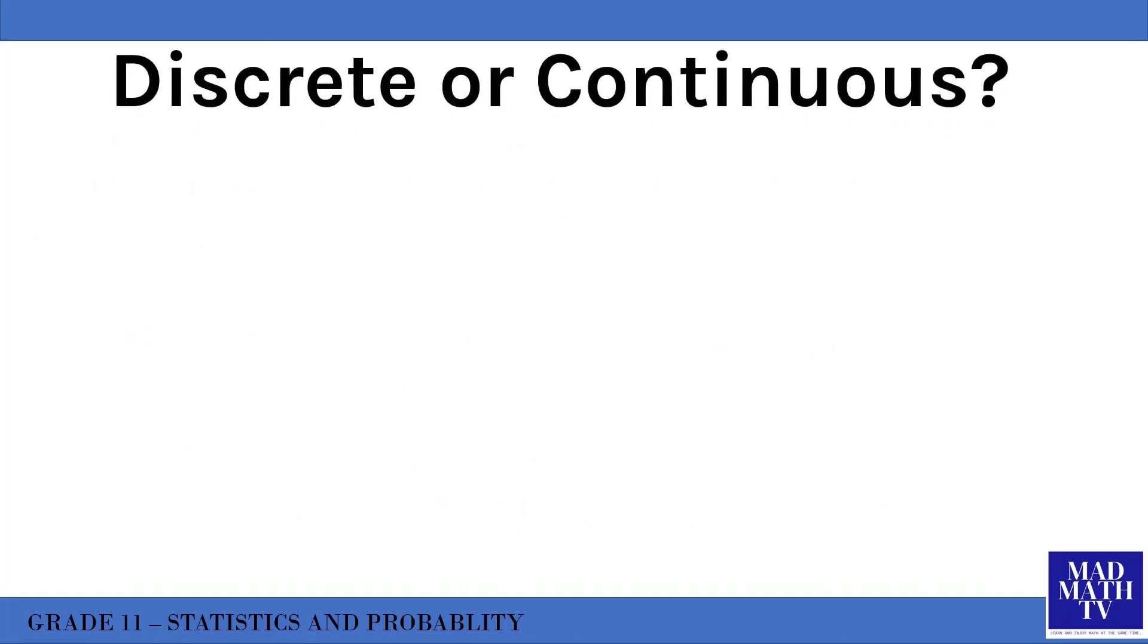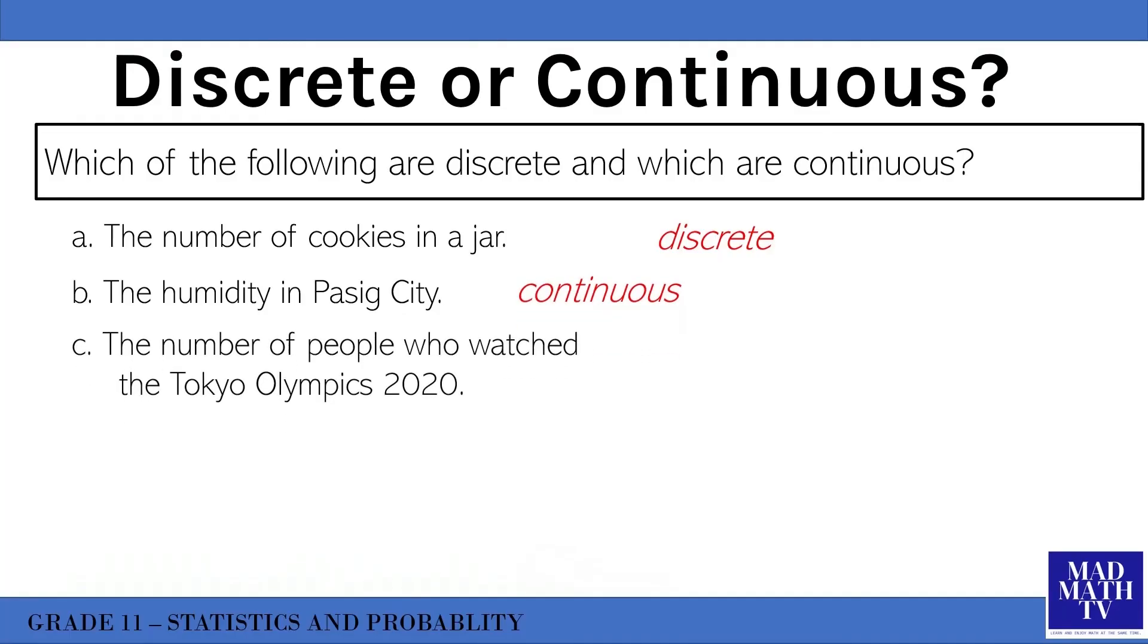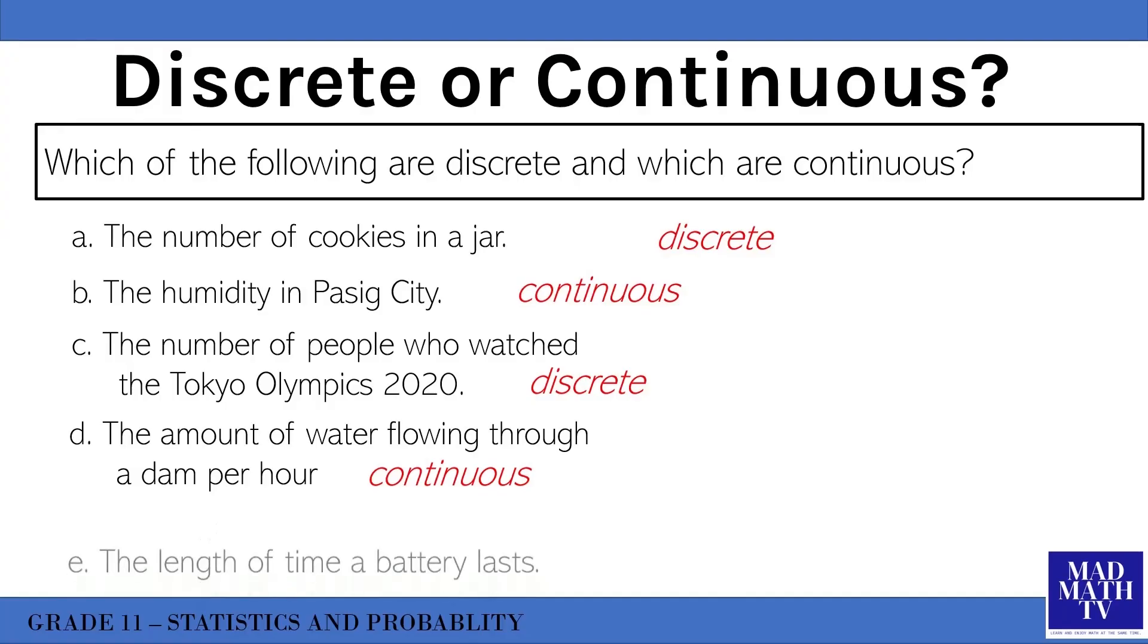Let's try this activity: which of the following are discrete and which are continuous? The number of cookies in a jar - countable, so it is discrete. The humidity in Pasig - definitely continuous. The number of people who watch the Tokyo Olympics 2020 - that is discrete. The amount of water flowing through a dam per hour - that is continuous. And the length of time a battery lasts - definitely continuous. That ends our discussion for the topic random variables. Thank you very much for watching, see you on my next video.